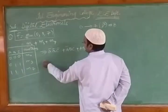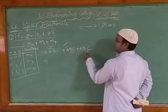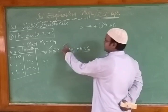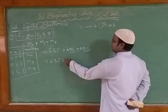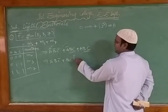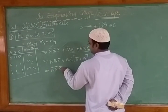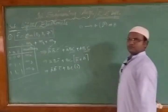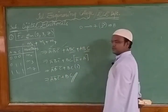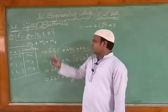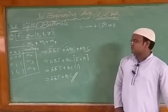Now we simplify: ā b̄ c̄ + ā b c + a b c. Taking bc common from the last two terms gives bc(ā + a) = bc·1 = bc. So the simplified function is ā b̄ c̄ + bc. This is the answer — the original function given as digits 0, 3, 7 has been converted and simplified into a specific Boolean expression.